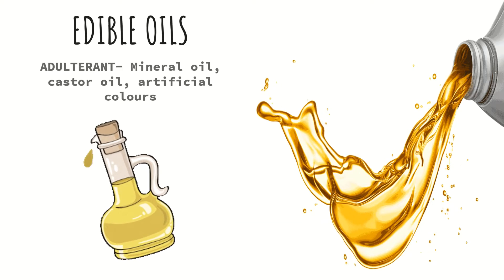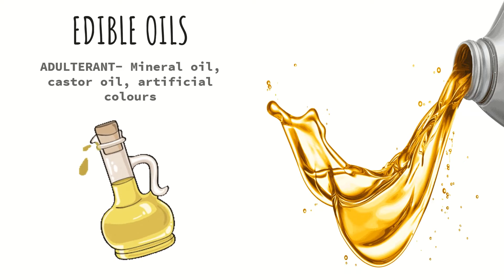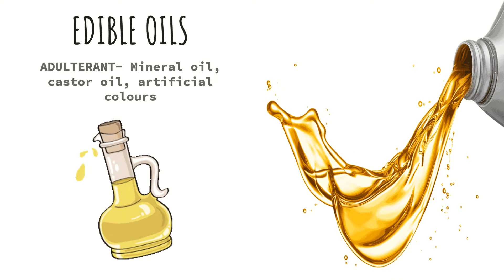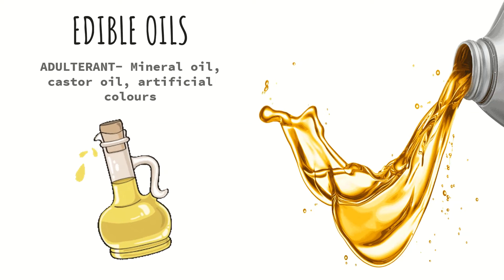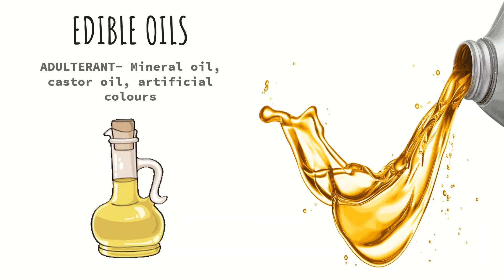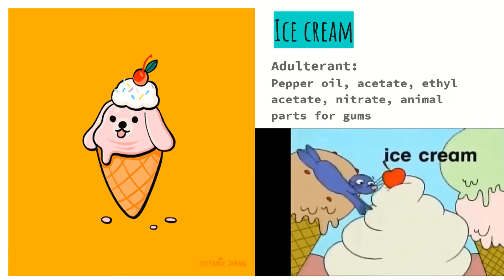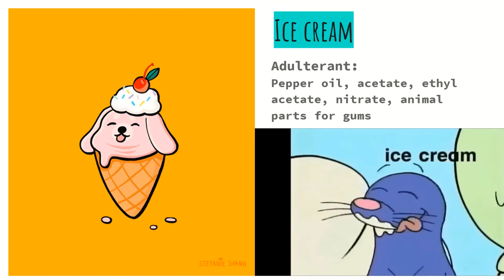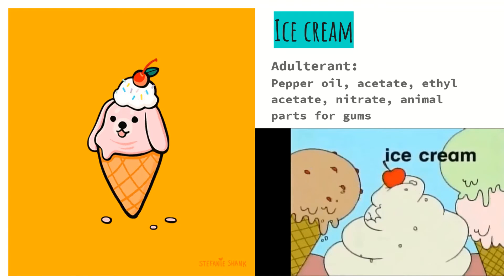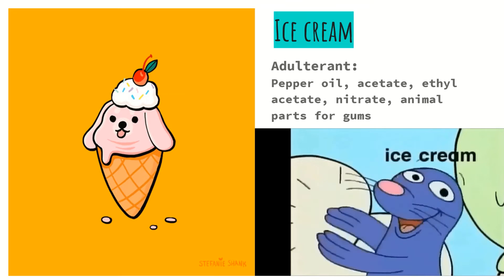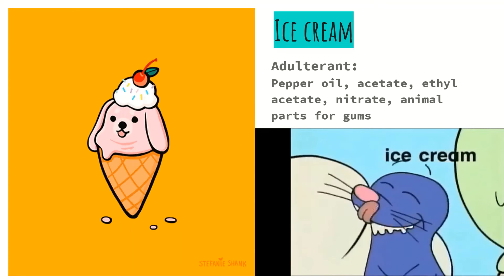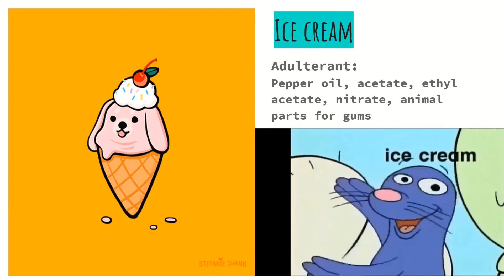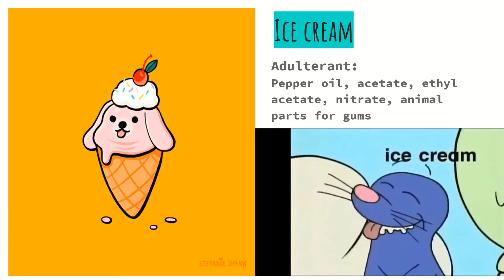Next we have edible oils — the adulterants used in edible oils are mineral oil, castor oil, and artificial colors, and these may also lead to many allergies, cancer, cardiovascular diseases, paralysis, and gallbladder problems. Next we have the most favorite product of so many people — ice cream. In ice cream, pepper oil, acetate, ethyl acetate, nitrate, and animal parts for gums are used, and it may also lead to many dreadful diseases of the lungs, kidney, and heart.